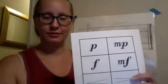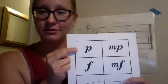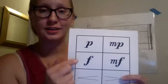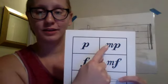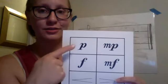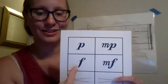So you have piano, which is soft, forte, which is loud or forcefully, mezzo piano and mezzo forte, medium soft, medium loud. So soft, medium soft, medium loud, and loud.